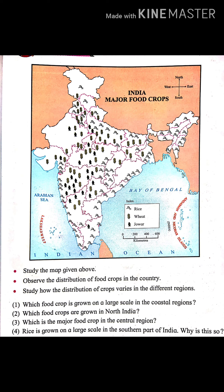Why is rice grown on a large scale in the southern part of India? Rice is grown on a large scale in the southern part of India because the crop requires hot, humid climate and heavy rainfall for its growth. The southern part of India has a hot and humid climate and also receives heavy rainfall.